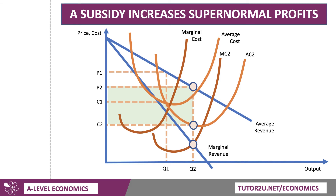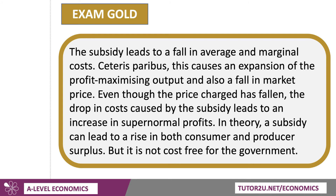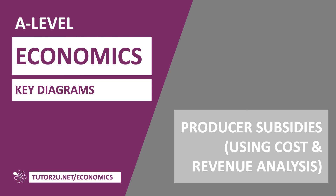Worth taking a screenshot if you're adding to your revision notes. That is what the effect of a subsidy is on a business. The subsidy leads to a fall in average and marginal costs. Ceteris paribus, this causes an expansion of the profit-maximising output and also a fall in price. And even though the price has fallen, the drop in costs caused by the subsidy leads to an increase in supernormal profits. In theory, a subsidy can lead to both higher consumer and producer surplus. But don't forget when evaluating that the subsidy is not cost-free for the government, and that's a consequence for taxpayers. That was a quick look at subsidies using cost and revenue curve analysis.